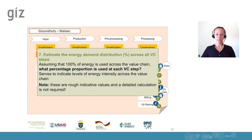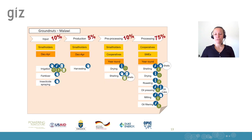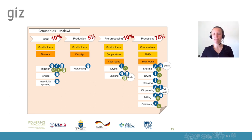In the seventh sub-step, we estimate roughly what percentage of energy is used in each value chain step. For groundnuts, we see that most energy — around 75% — is probably used in processing. This also shows us where we can get the highest impact.